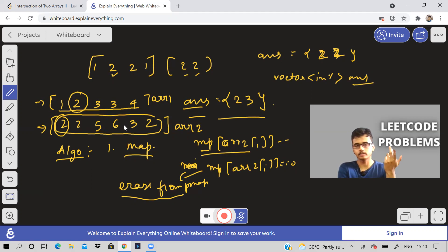We will be getting union then, we will not be getting intersection. That is why when the frequency of an element in the map reaches zero, we have to erase it from the map. So this is first method, store it in the map.